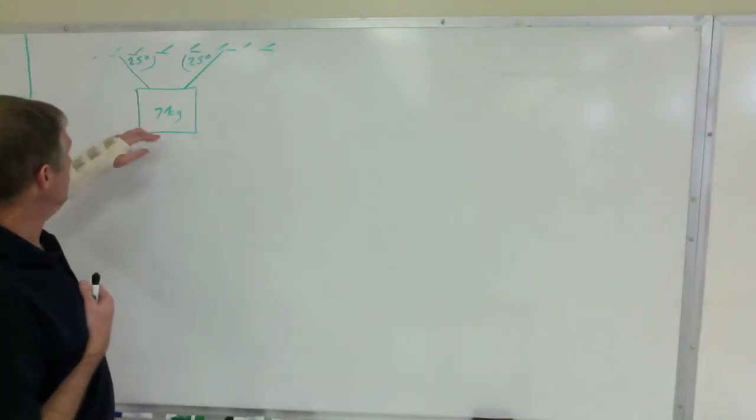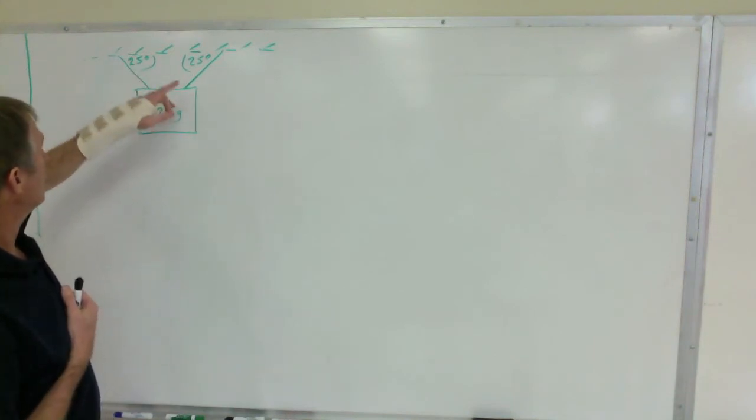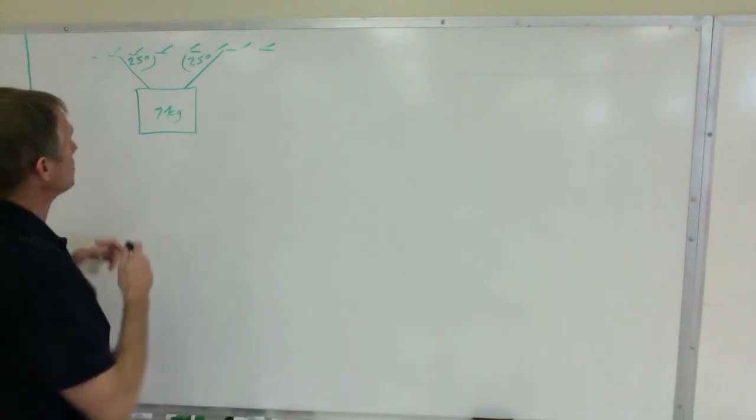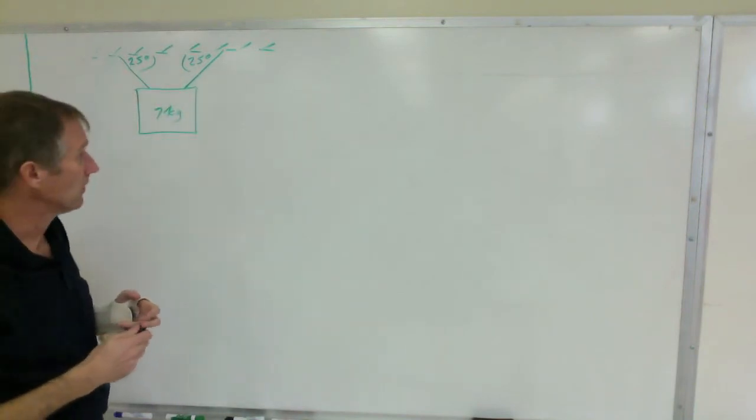All right, we have a sign under tension, a seven kilogram sign. These are two cables, they're both at the same angle, 25 degrees to the ceiling or beam or whatever it is.